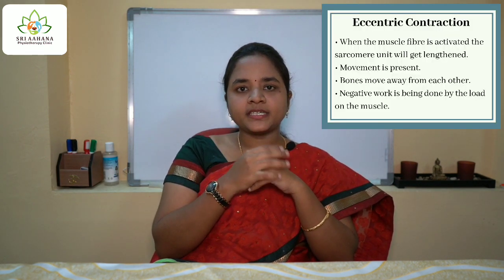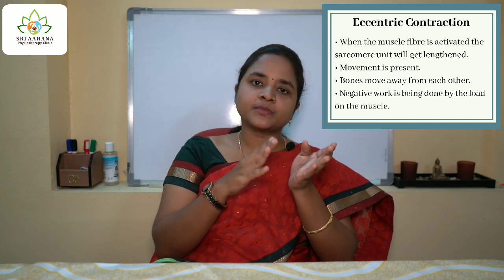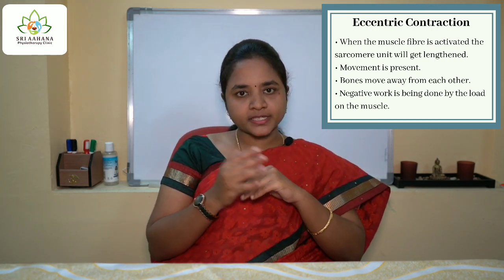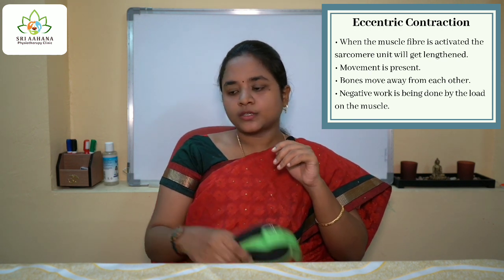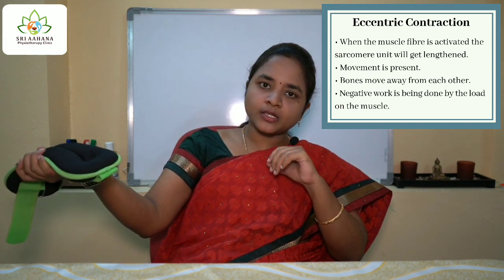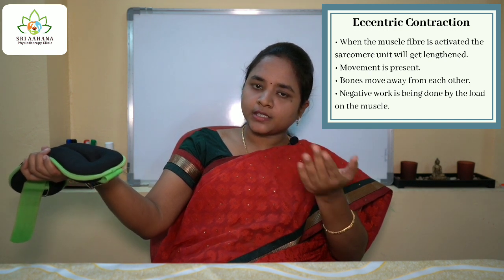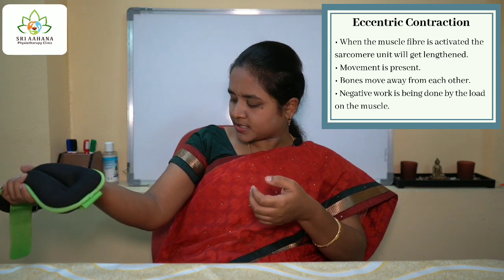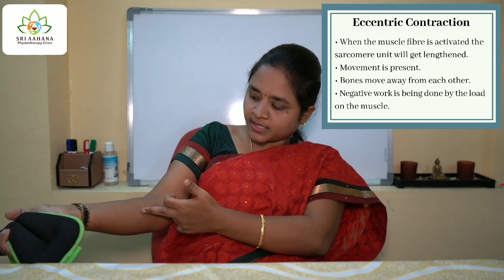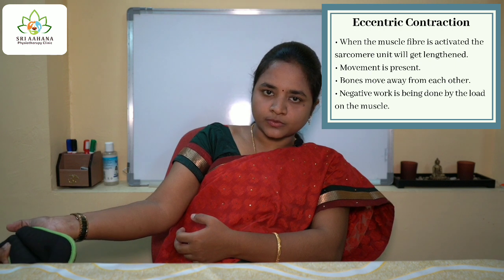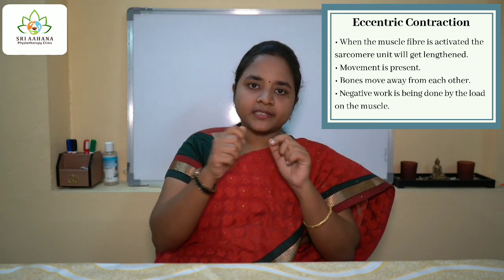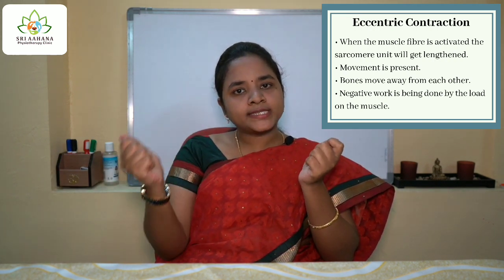The next type of contraction is the eccentric type of contraction. In an eccentric type of contraction, when the muscle fiber is activated, the sarcomere unit gets lengthened. I'll demonstrate with the help of a sandbag — when I try to hold this sandbag for a long period of time, the weight pulls my hand down, meaning the load is much heavier than the force produced by my muscle. A lengthening occurs at the biceps — the bones are moving away from each other, the joint angle is getting more, and my hand is moving down. A negative kind of work is being done by the load on the muscle, stretching the sarcomere unit and putting it into eccentric contraction.